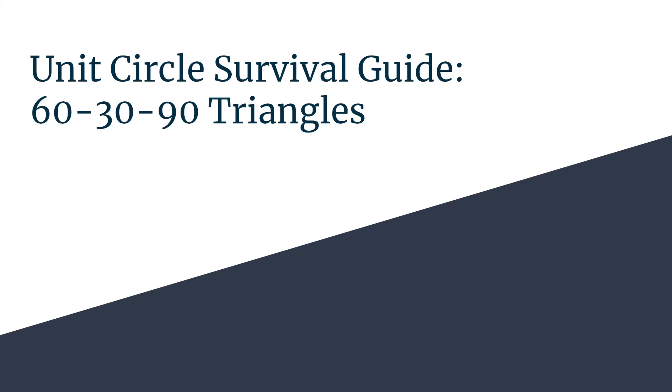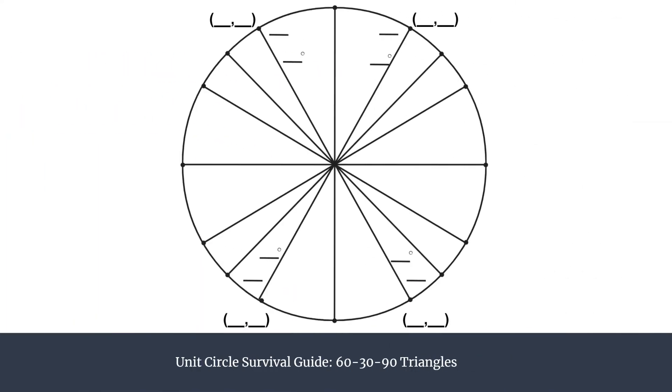Here we have a unit circle and we're focusing on the angles that have 60 degrees, or pi over three, as their reference angle — that's just how much rotation to get back to the x-axis. Today's video is not focused on how to label all of the unit circle special angles in degrees or radians; I'll link to those videos in the description.